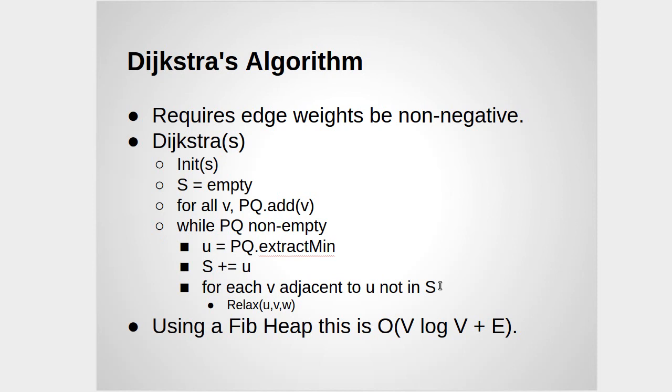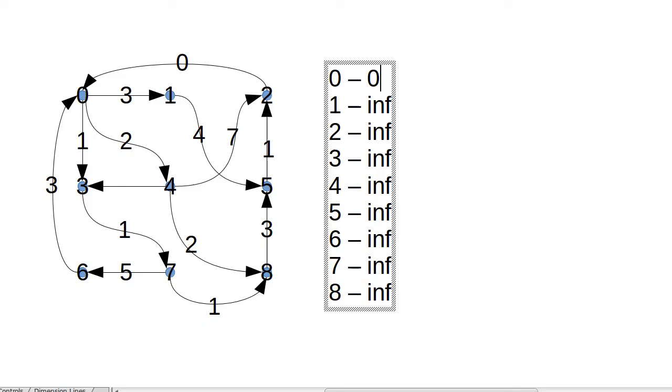So to make sure we understand this, let's go through and use our example graph to go through the details of Dijkstra's algorithm. In this case, I'm going to start off with our start vertex being index zero, and that would give us a priority queue that looks like this.